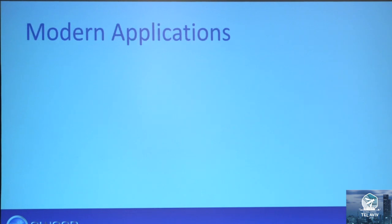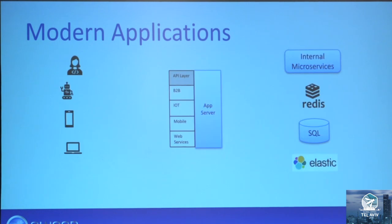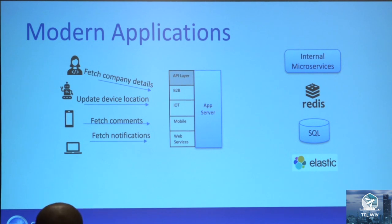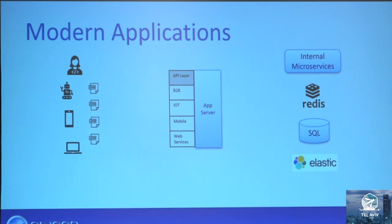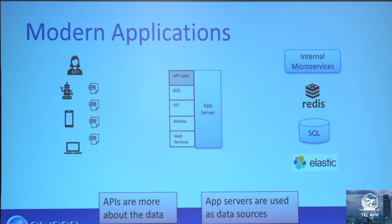What happens today in modern applications? First, you have more types of clients — developers using APIs, IoT devices, mobile devices, together with modern applications. On the other hand, you have more types of databases including SQL, NoSQL, Redis, and internal microservices used to fetch data. Today, clients ask for very specific types of data or actions from the API. The application server fetches or updates data from data sources and returns raw data in JSON format. APIs are essentially a proxy between the client and the databases.